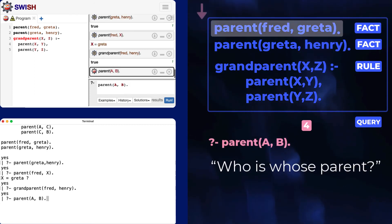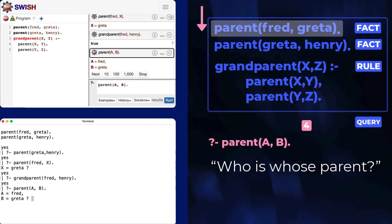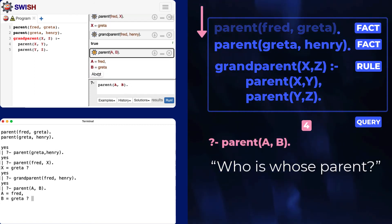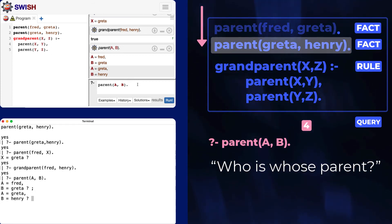Some queries have multiple solutions. To see them, hit next in Swish, or use semicolon in Sixtus.